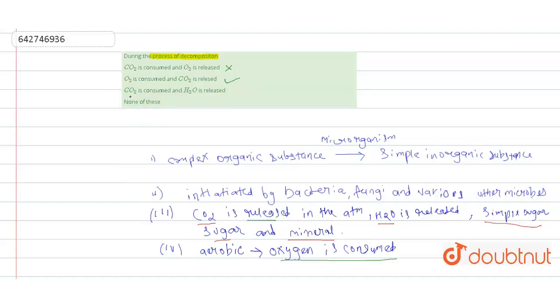The third option says that carbon dioxide is consumed and water is released. This option is also wrong.